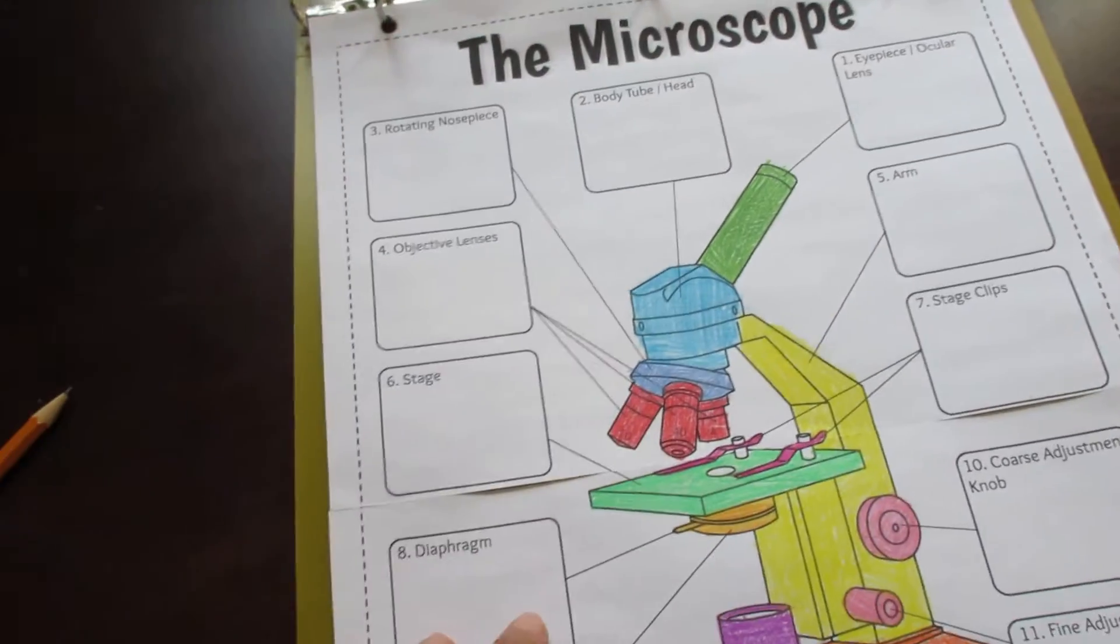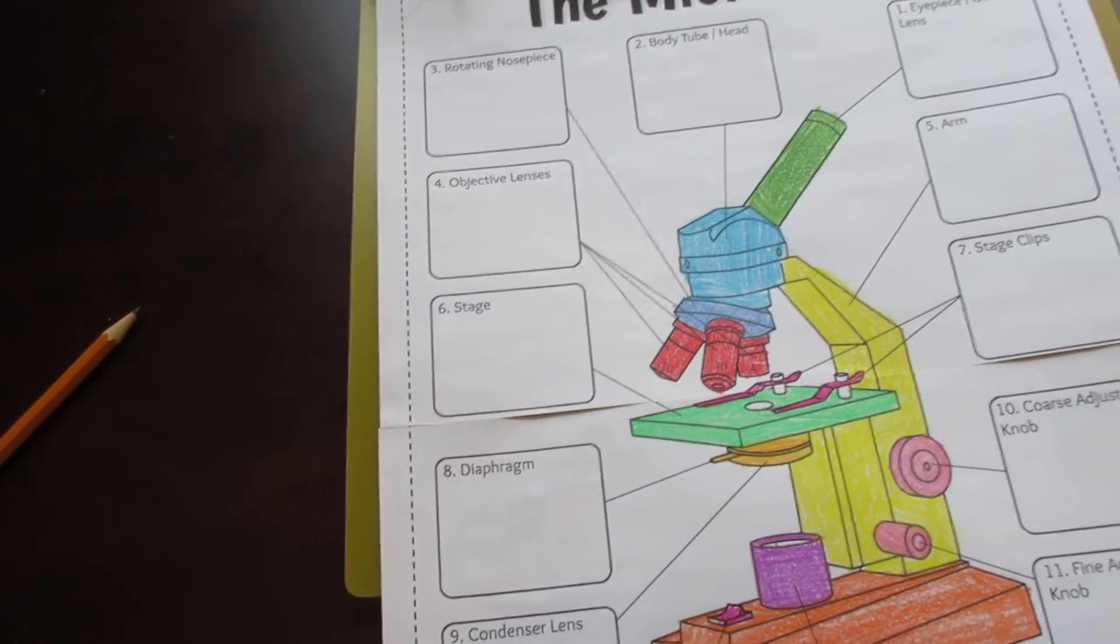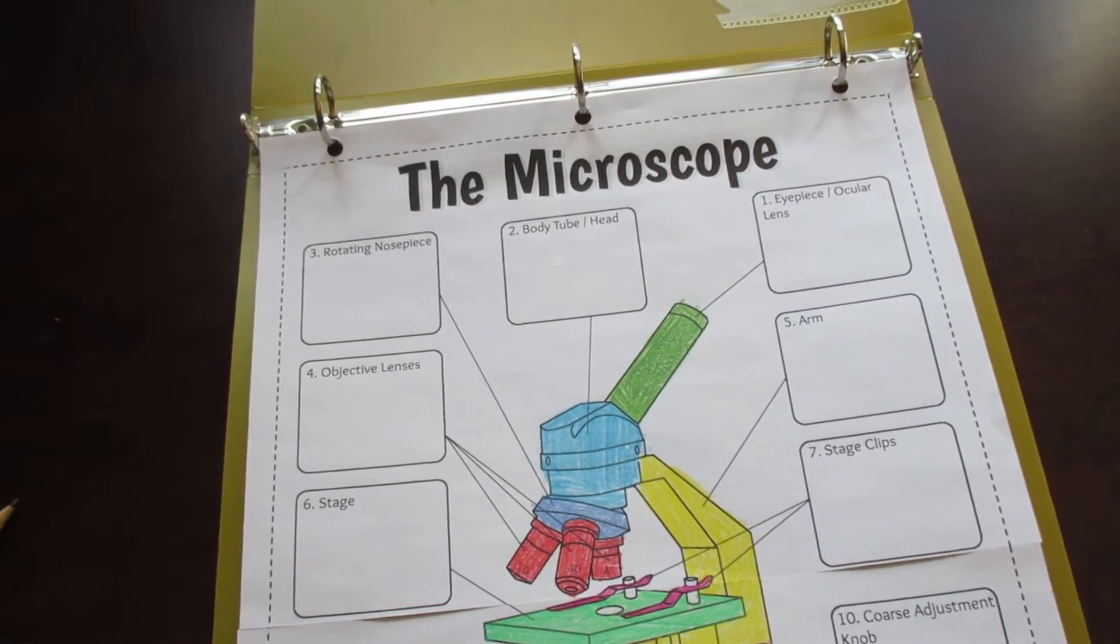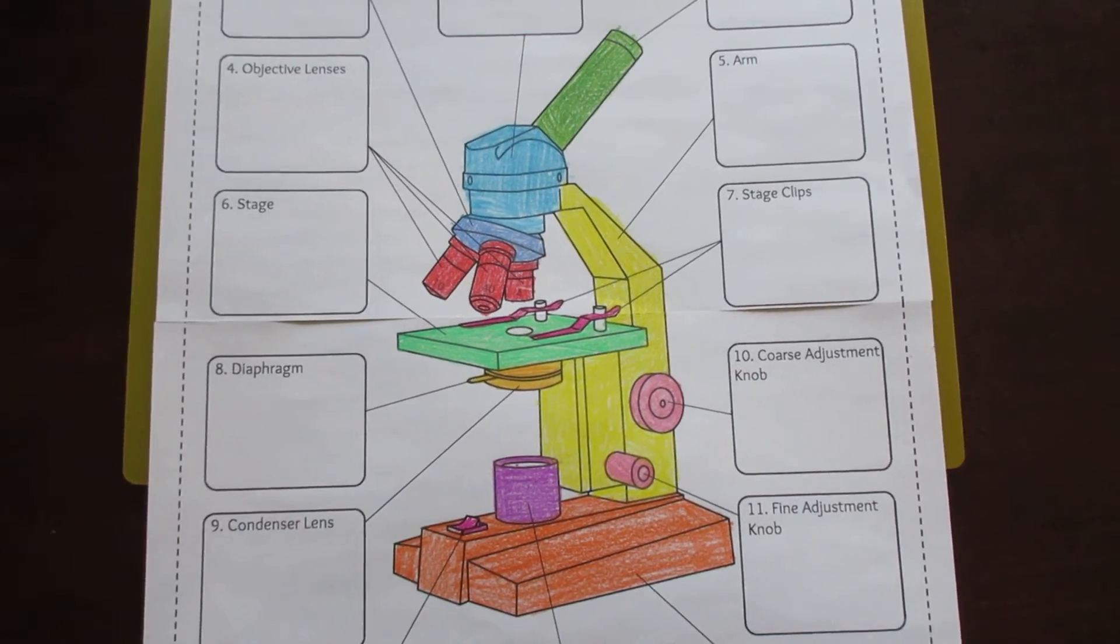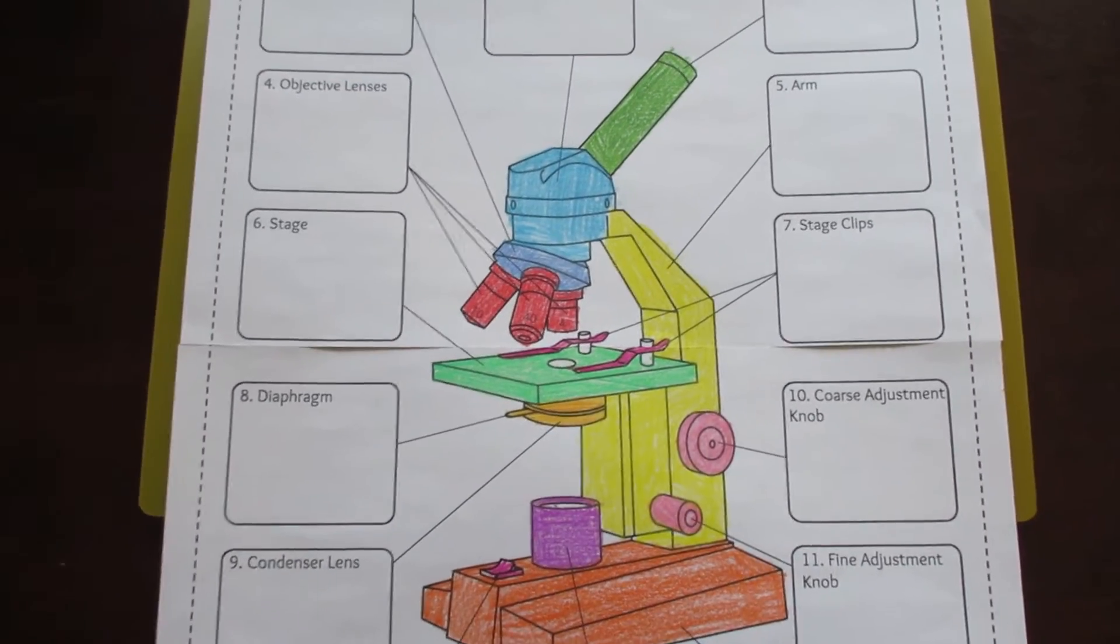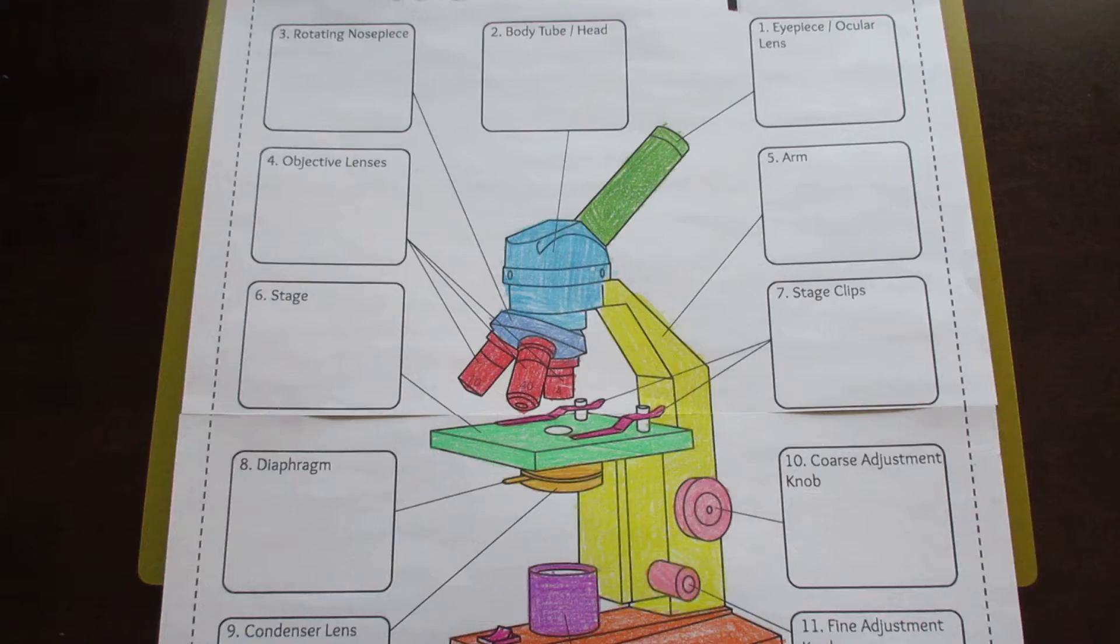If you want to use this for an interactive notebook, just cut along the dashed line to make the foldable smaller. The diagram here is large and perfect for coloring if that's what you choose to have your students do. I've provided various options for this foldable to aid in differentiation.